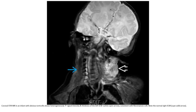MRI in an infant with obvious torticollis demonstrates heterogeneously increased signal intensity and enlargement of the left sternocleidomastoid muscle, consistent with fibromatosis colli, with a normal right sternocleidomastoid muscle for comparison.